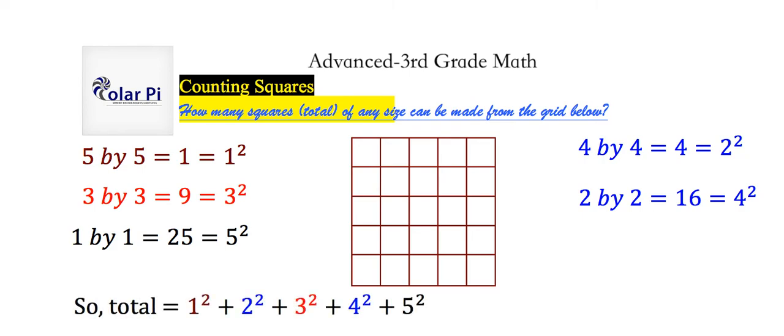So, in total, we have 1² + 2² + 3² + 4² + 5², which is easier to add in this form. And so, a total of 55 squares that we can make out of this 5x5 square grid.